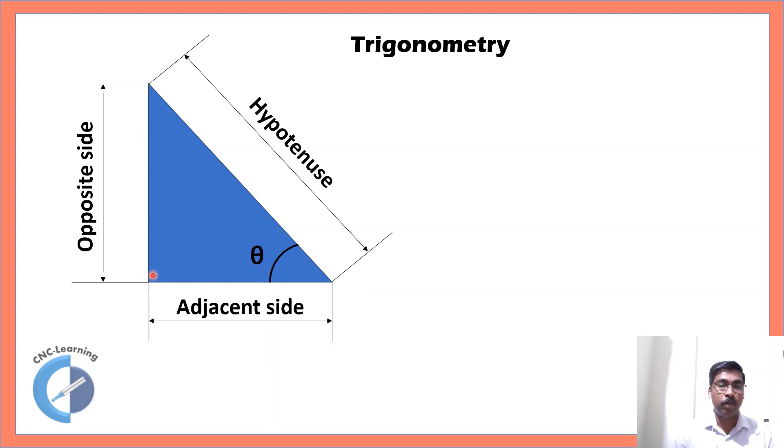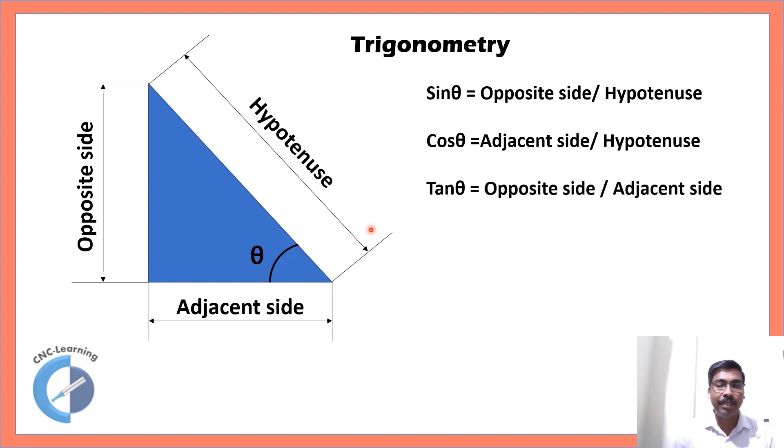Now, if you have this angle, then this becomes the opposite side. Now, in trigonometry, sin theta equals opposite side by hypotenuse. Cos theta equals adjacent side by hypotenuse. Tan theta equals opposite side by adjacent side. Now, based on your drawing input, you have to decide whether to use sin theta, cos theta or tan theta.